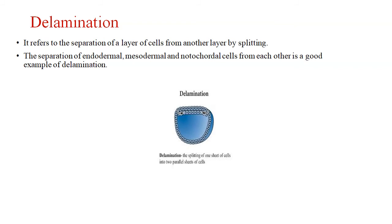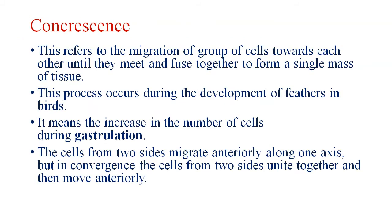When we talk about delamination — 'de' refers to loss, 'lamina' refers to layer — it refers to the separation of a layer of cells from another layer by splitting. The separation of endodermal, mesodermal, and ectodermal cells from each other is a good example of delamination.